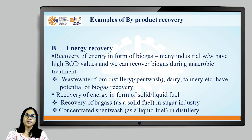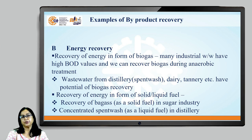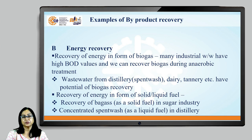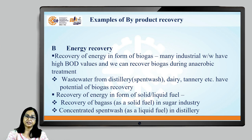You can also recover energy from waste. For example, wastewater having very high Biological Oxygen Demand (BOD) — you can recover biogas or methane. Many industrial wastewaters have such BOD values and it is possible to recover biogas by providing anaerobic treatment like an anaerobic digester. Wastewater from distillery, which is known as spent wash, wastewater from dairy, wastewater from tannery, etc., have very high potential for biogas recovery. This biogas can be used as fuel on the industrial premises itself and will result in huge savings on fuel costs.